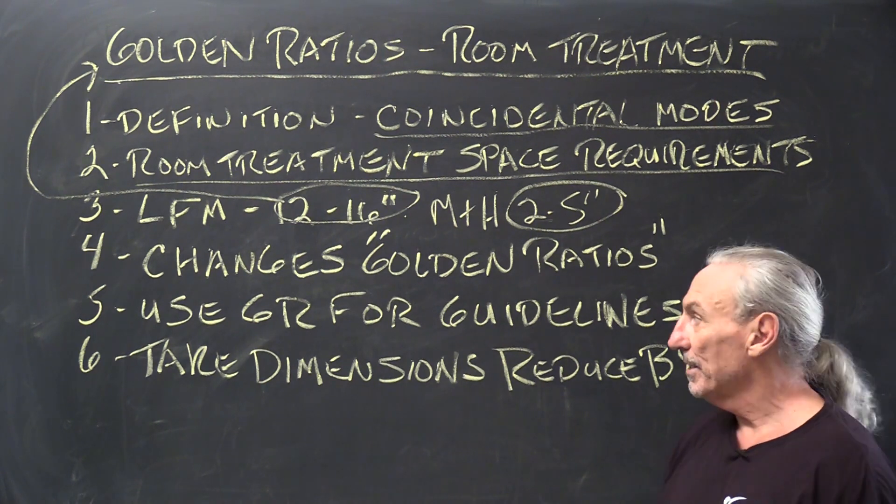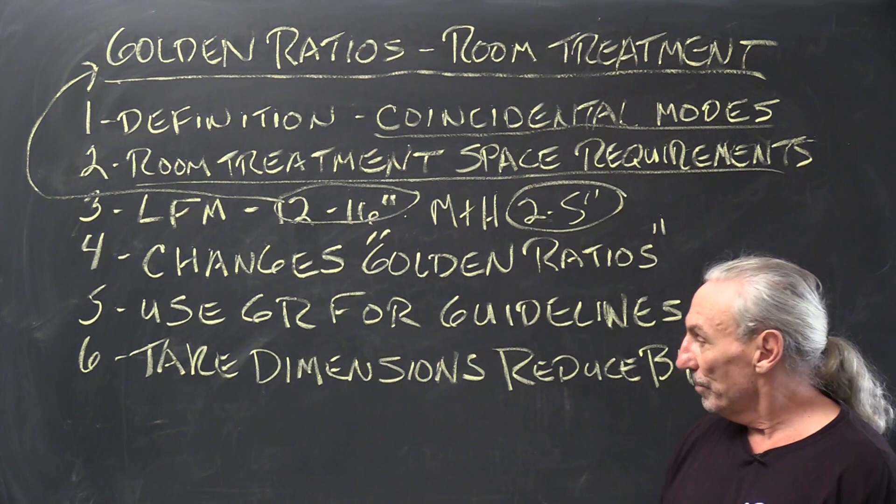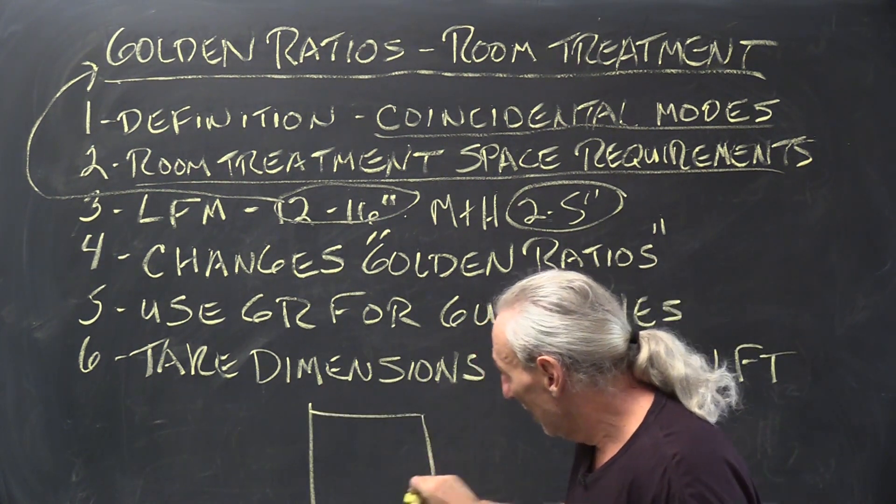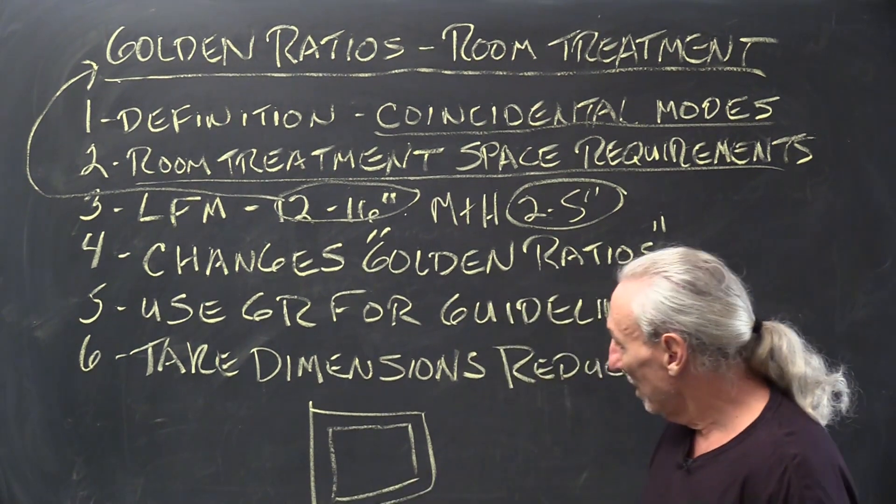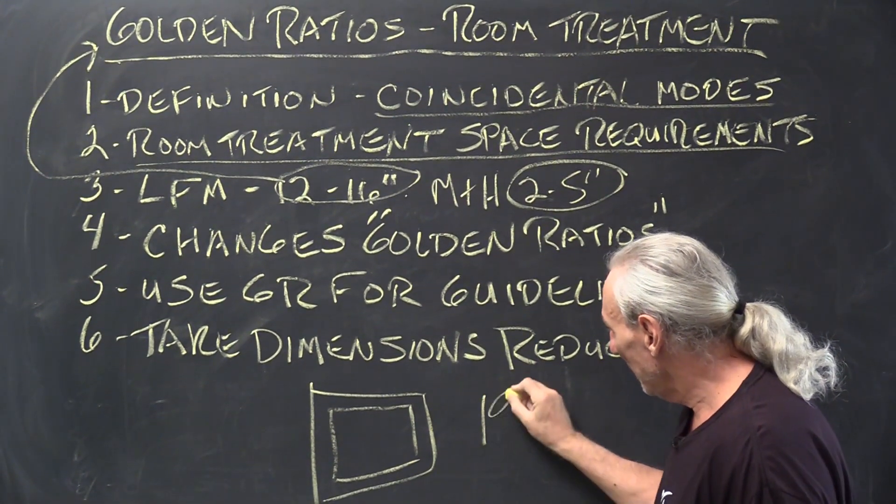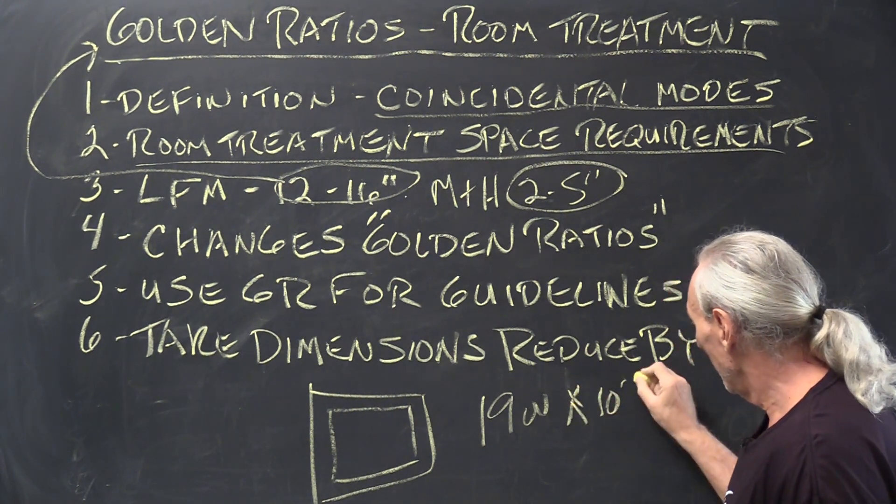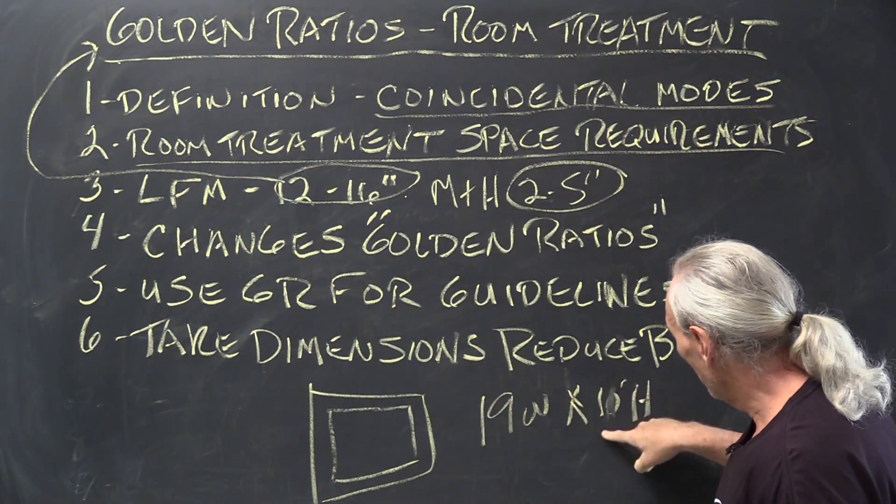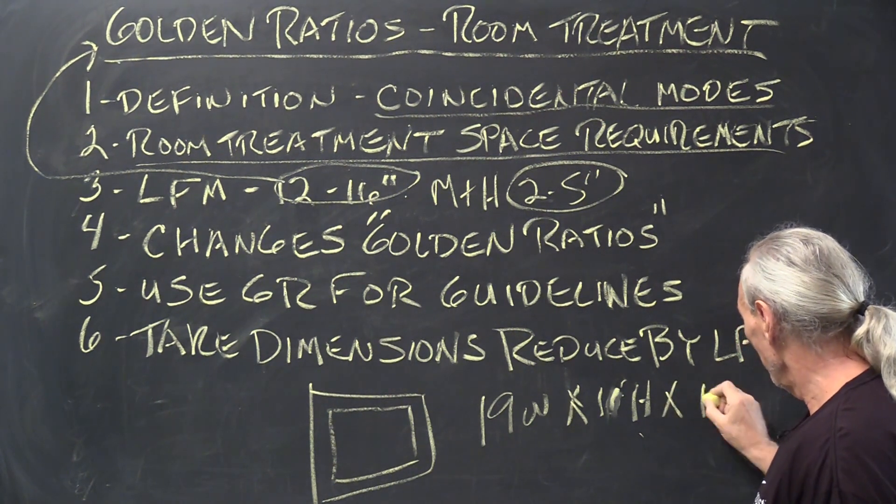Use them as guidelines and then don't forget to add 12 inches to the width, 12 inches to length. So if you started out with a 19 wide by 10 foot high, oh let's dream a little, let's do 11, by 15 foot long.